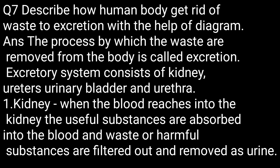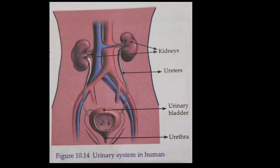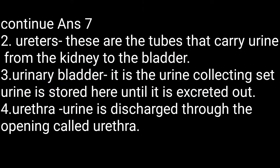The waste or harmful substances are filtered out and removed as urine. You can see in the diagram given here of the urinary system in humans. Next, the ureter — these are the tubes that carry urine from the kidney to the bladder.